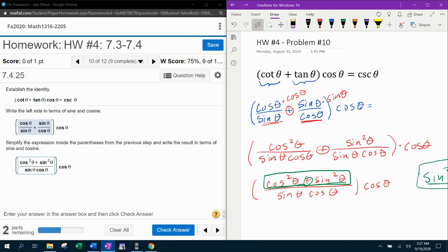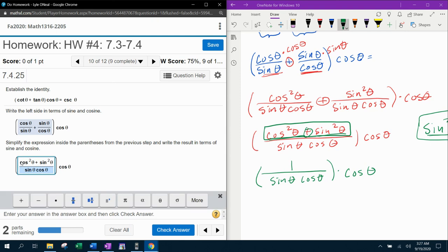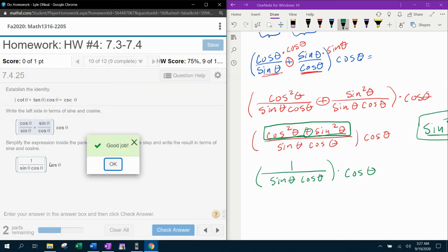So I can replace sine squared theta plus cosine squared theta with one because that's what it's equal to. So they did actually want me to simplify that further. So that reduced fraction will be one over sine theta, cosine theta, and then the cosine theta outside. And this sucks because I typed all that stuff in when really all they wanted was one. Hard to tell how much they want you to do there.